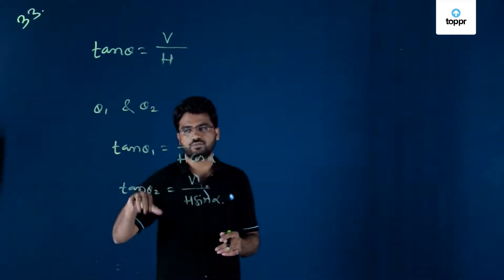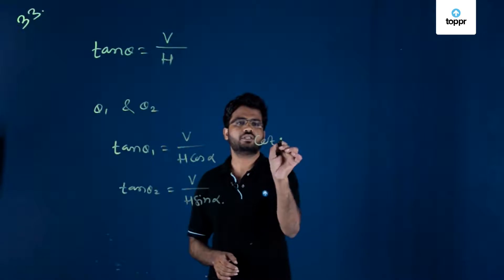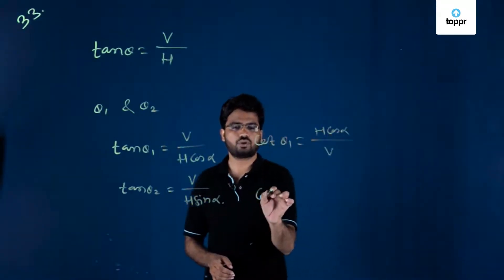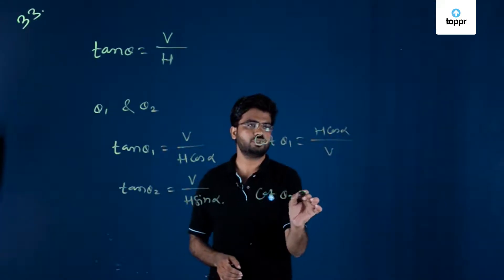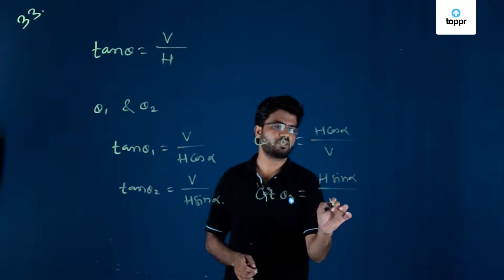And if we reciprocal this, we will get cot theta 1 as H cos alpha divided by V, and cot theta 2 is equal to H sin alpha divided by V.